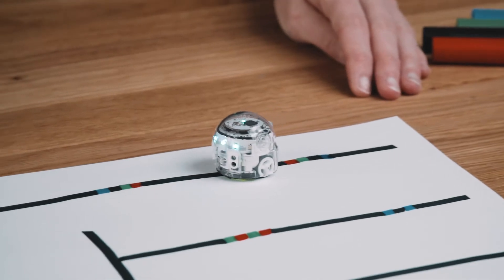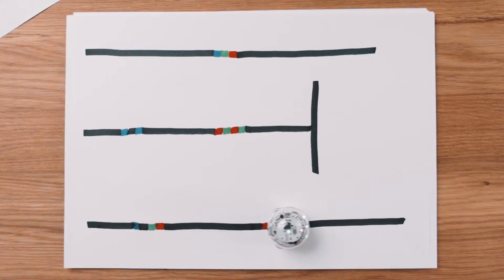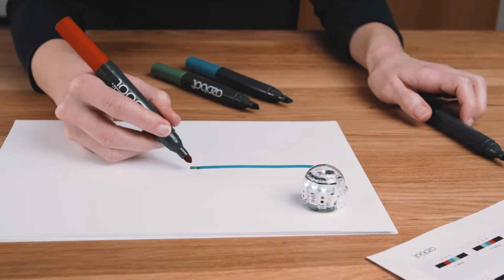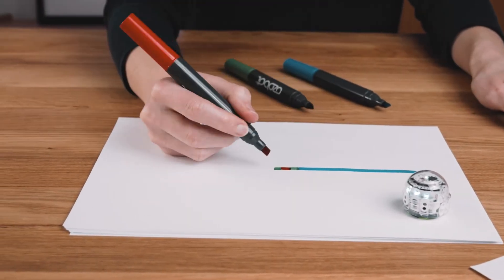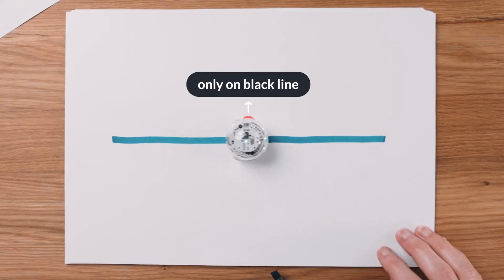To be sure your Evo can read your color codes, here's a quick list of what not to do. Don't draw color codes on colored lines. They should only be drawn between black lines.